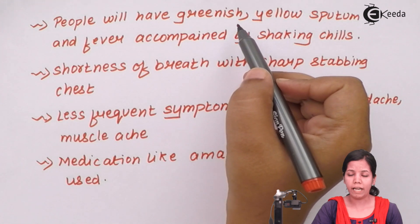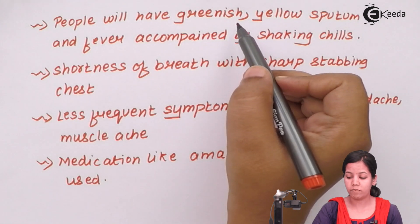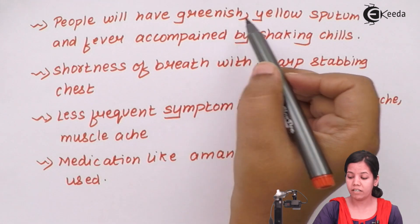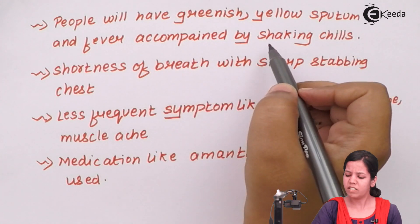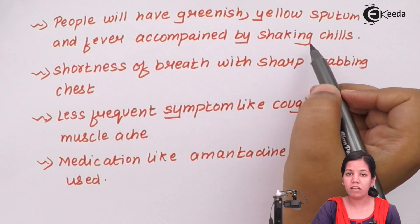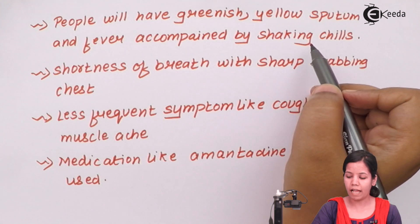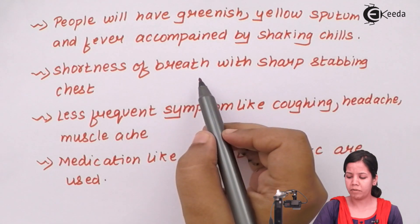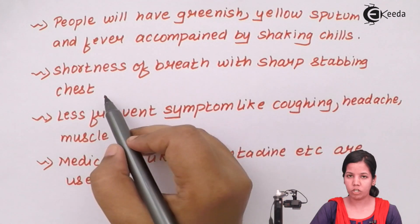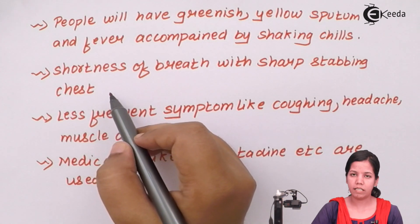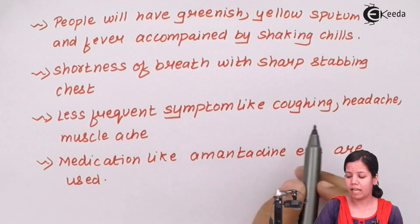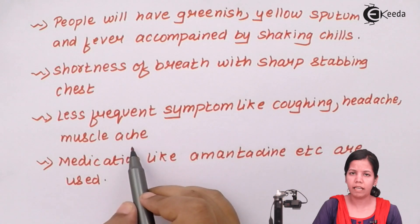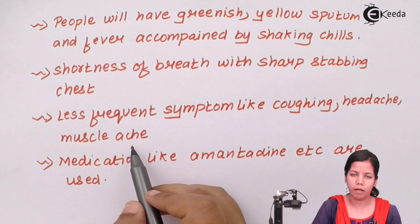People with viral pneumonia may have symptoms like greenish or yellowish sputum. They may also be accompanied by fever with shaking and chills, especially high fever, as well as headache. Shortness of breath with sharp stabbing chest pain is seen in children as well as adults with pneumonia. Less frequent symptoms like coughing, headache, and muscle ache are also seen in certain types of pneumonia.